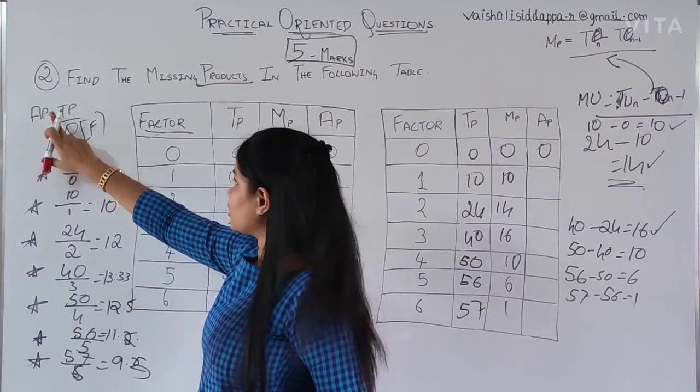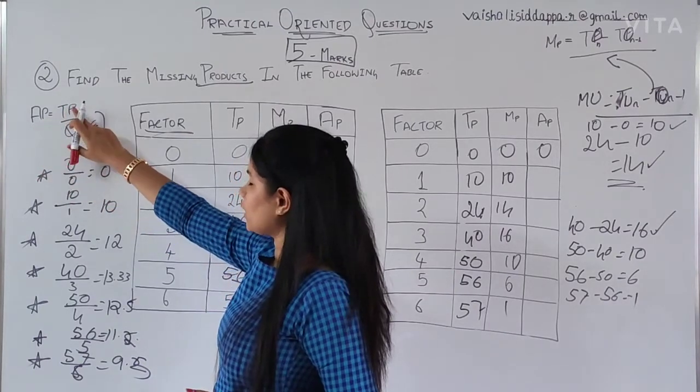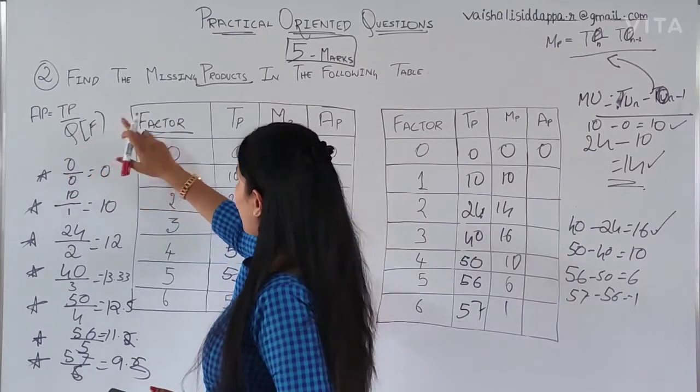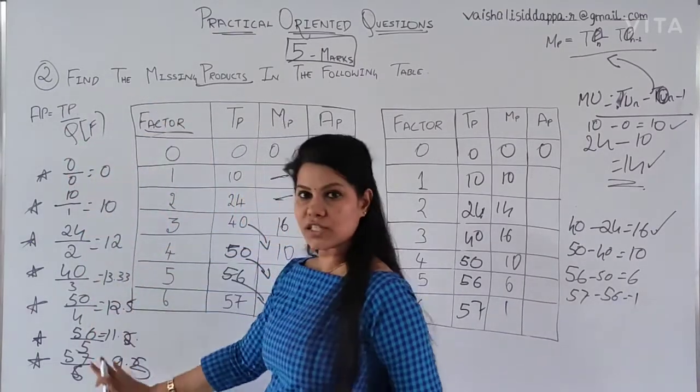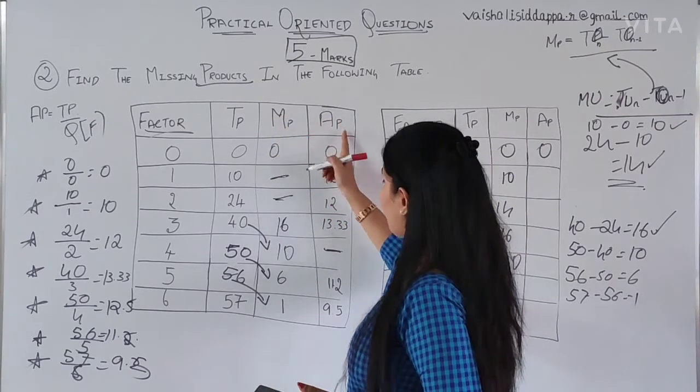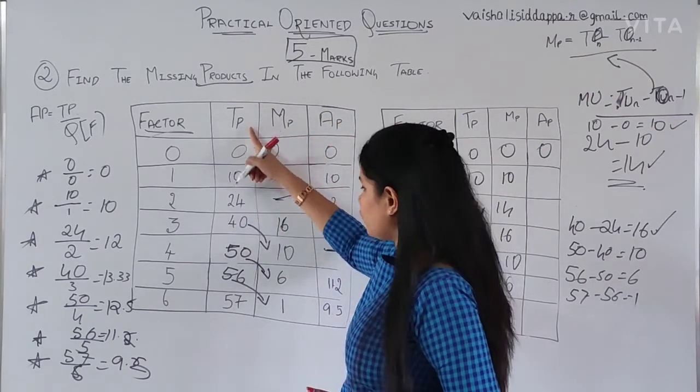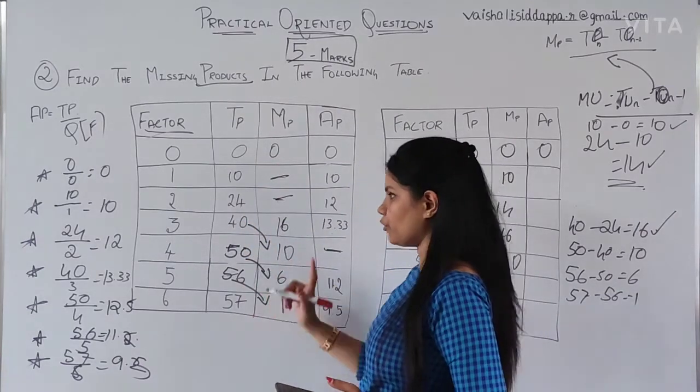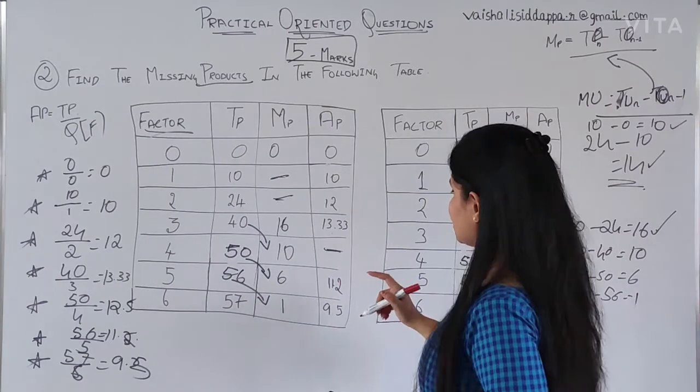So, to find out the average, you will be having a total product. Total product divided by quantity usually. Otherwise, if you have any of the factors, this is the way how you will find out. To find out MP, to find out AP, for both, you need TP. So, first you have to find out TP. TP, you already got to know how you are going to find out. So, now, fill this blanks.